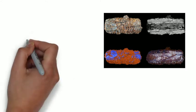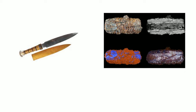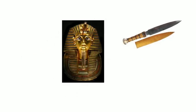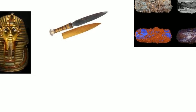In addition, in 1922, a meteoric iron dagger was discovered in the tomb of the ancient Egyptian king Tutankhamun. This led to the conclusion that the artifact had a celestial origin and came from outer space.